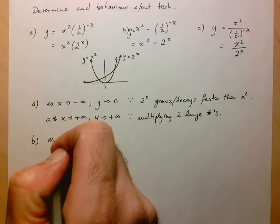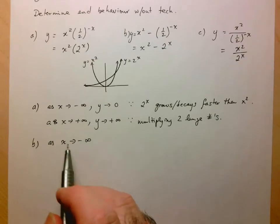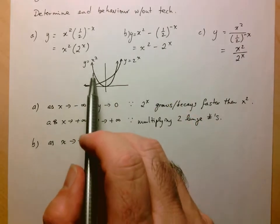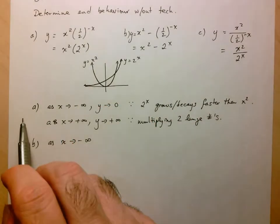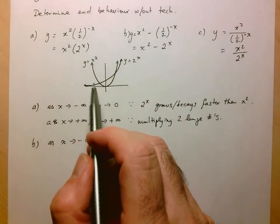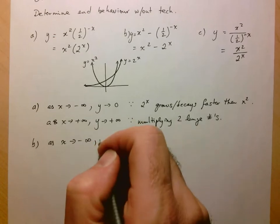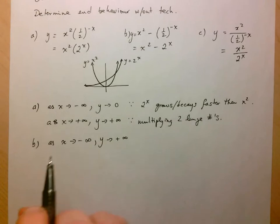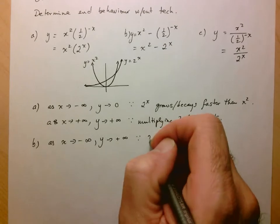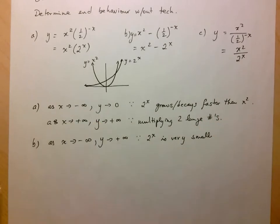Let's look at Part B now. As x goes to negative infinity, x squared is approaching large numbers and I'm subtracting a really small number in 2 to the x. In the end, the subtraction is going to have minimal difference on my starting value that x squared gives me. So y is just going to be approaching positive infinity, because subtracting this really small number has barely an effect on x squared — since 2 to the x is very small, it has very little effect.